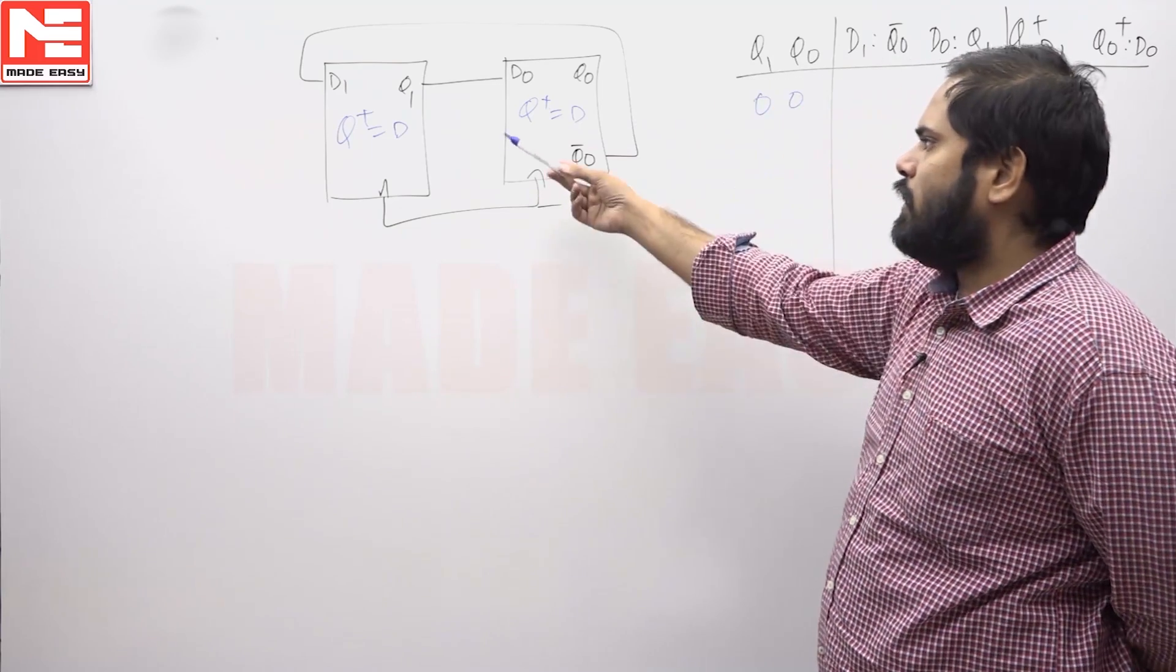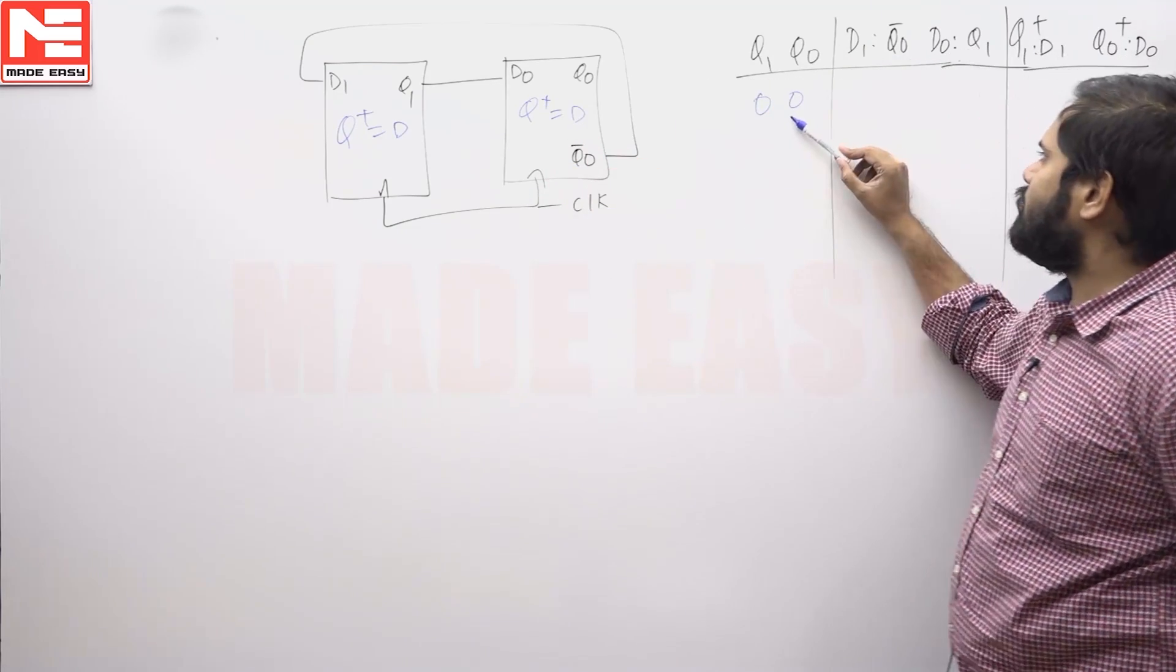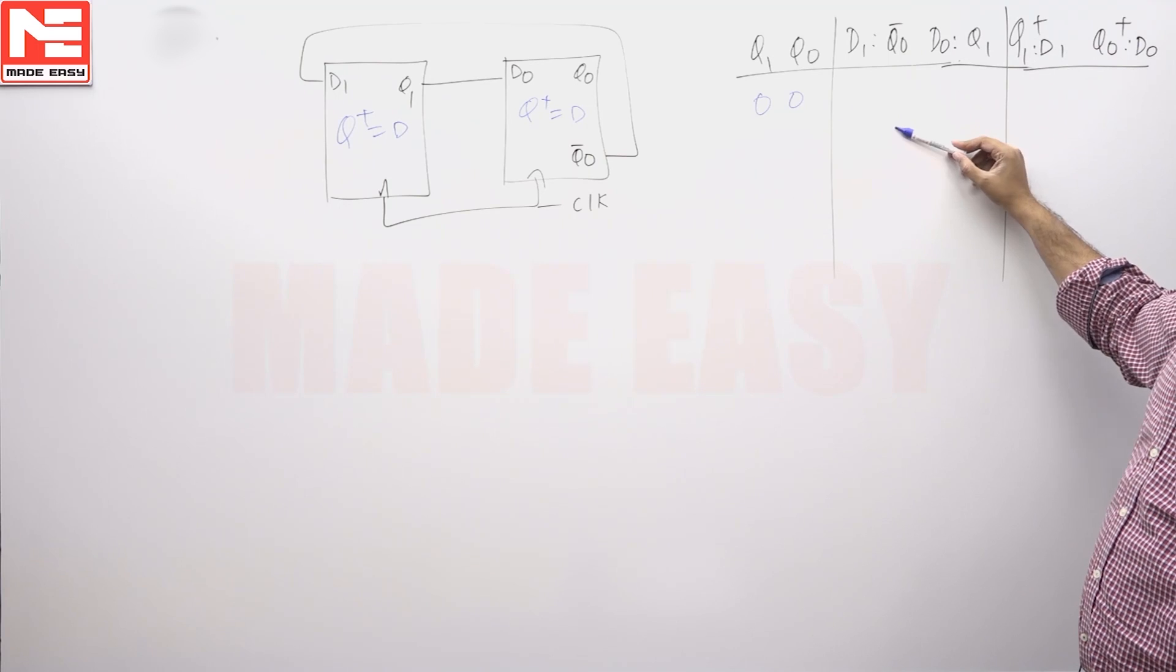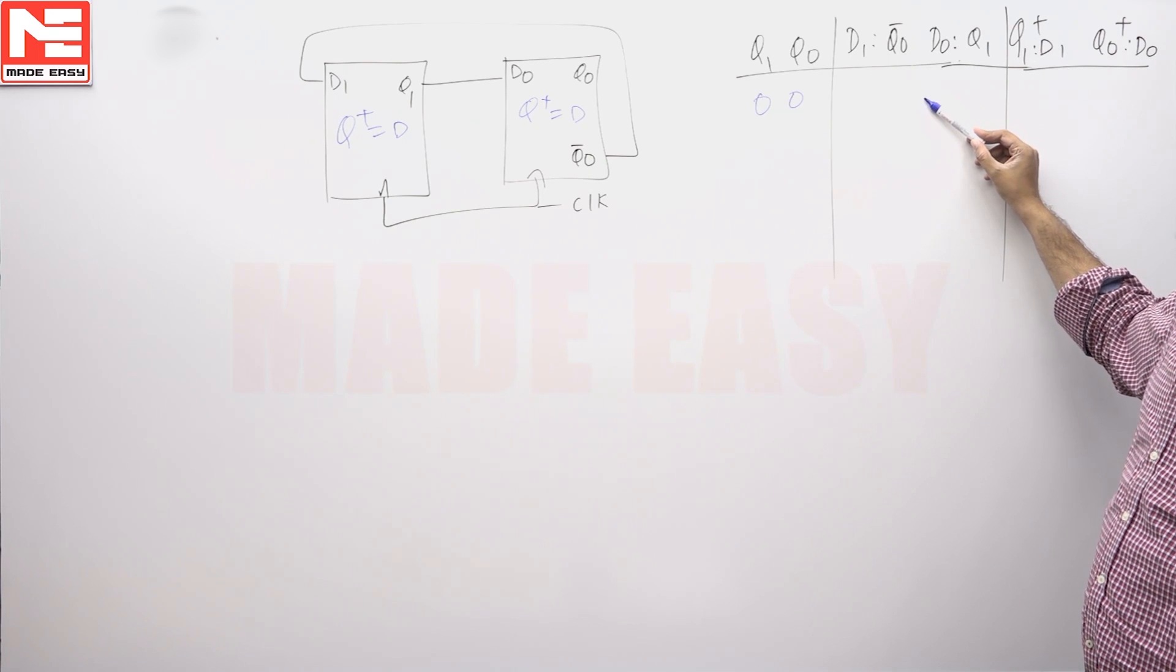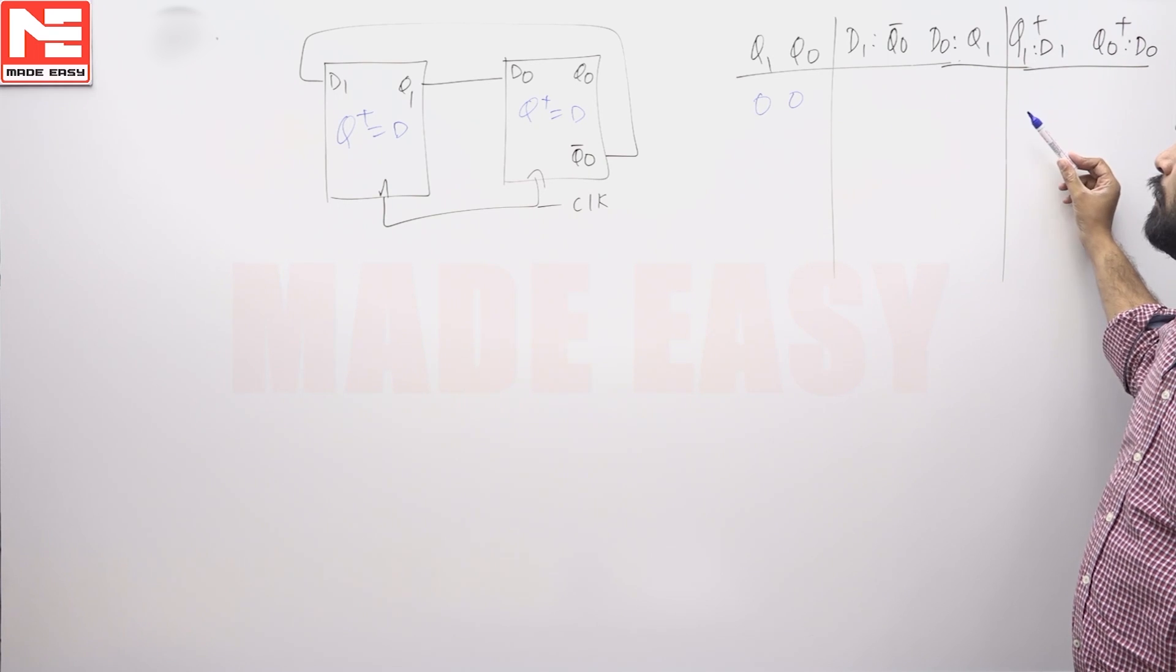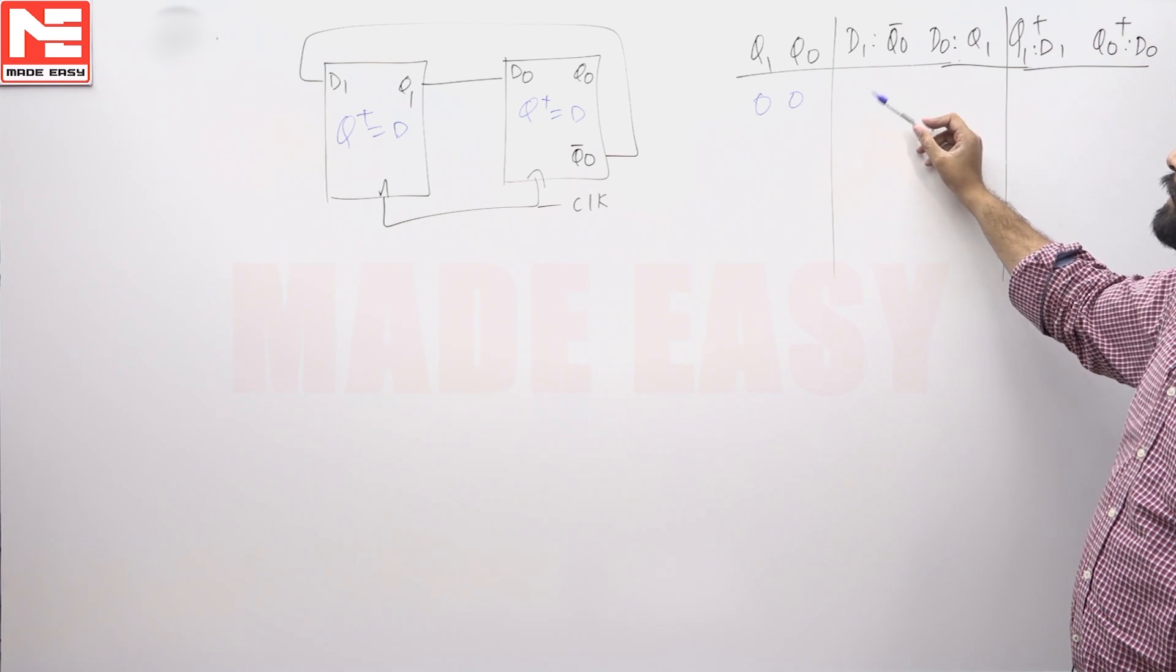So from this D flip flop, present state is 00, the next possible state, let us find the D input. Once you know the D input, then we can always find the next state. Let us now find the D input, let us see what is the D input.